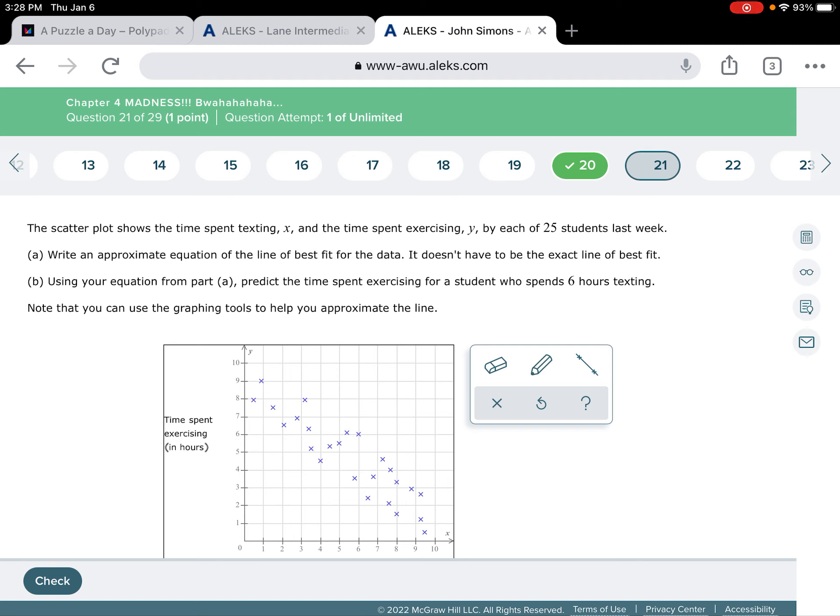It doesn't have to be the exact line of best fit. B, using this equation, predict the time spent exercising for a student who spent six hours texting.